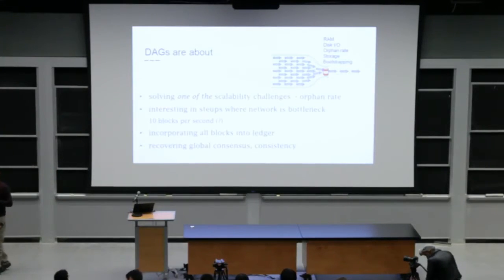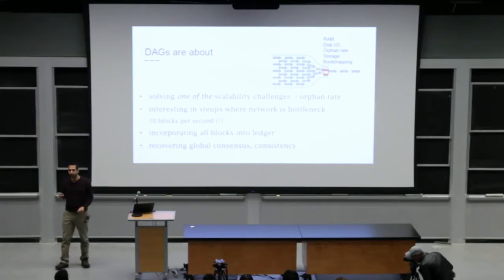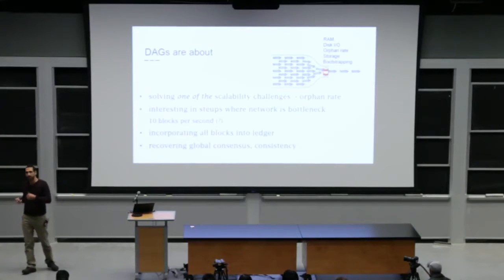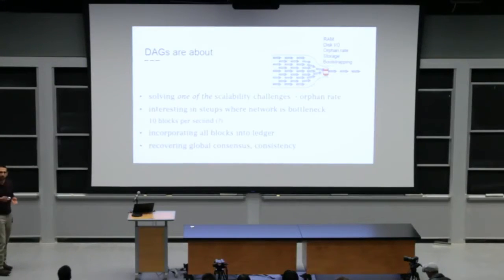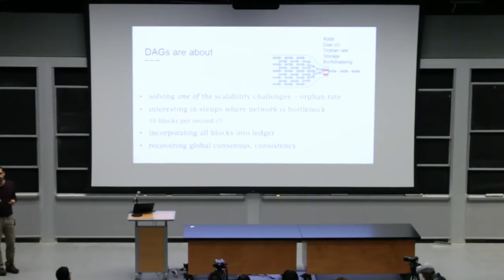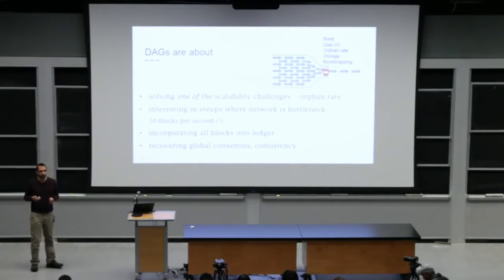If you want to scale the blockchain, let's say we want 10 blocks per second, then there are several problems, several barriers. RAM storage, bootstrapping and syncing new nodes. Many barriers to scalability. One of them is the orphan rate. And in a healthy system, the network is the bottleneck because processing computer is something that we can control, optimize, but we can't control the network. So if we can scale the system to a level where the network will become the bottleneck and the propagation delay will be a problem, then orphan rates will be the main barrier. And DAGs are a data structure and a protocol family that may help to solve it.